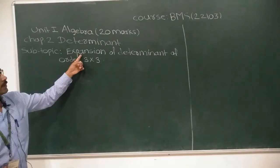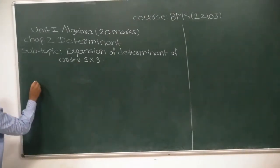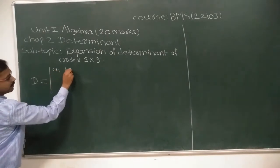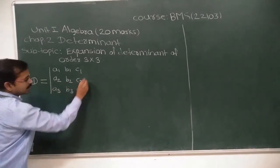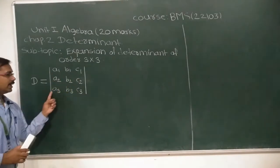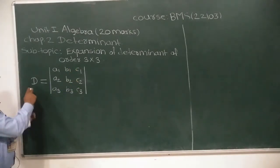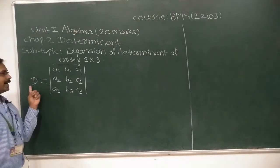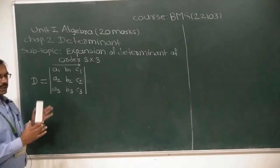Subtopic: the expansion of determinant of order 3 by 3. The determinant has elements A1, B1, C1 in the first row; A2, B2, C2 in the second row; A3, B3, C3 in the third row — 3 rows and 3 columns total. The determinant expansion is generally done according to the first row: A1, B1, C1.